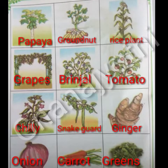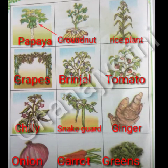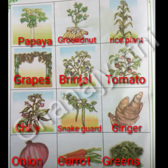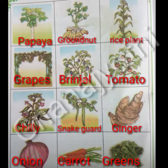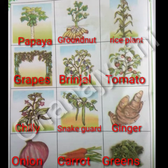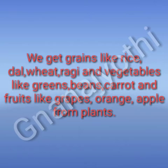Name the vegetables and fruits you see in these pictures. Papaya, groundnut, rice plant, grapes, brinjal, tomato, chili, snake gourd, ginger, onion, carrot. We get grains like rice, dal, wheat, and ragi, and vegetables like beans and carrot, and fruits like grapes, orange, and apple — all from plants.